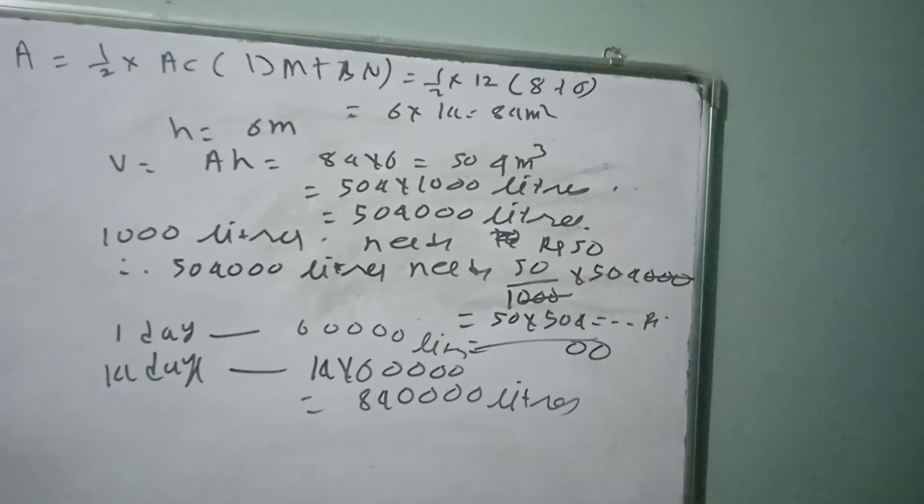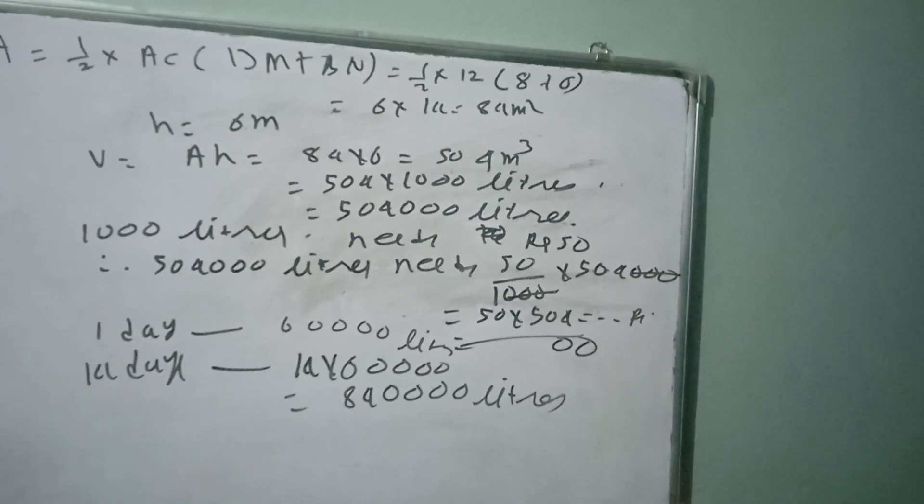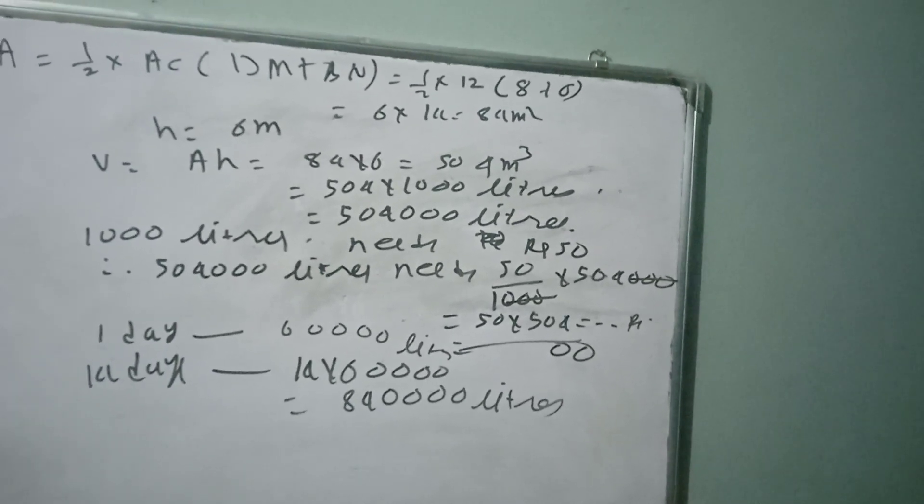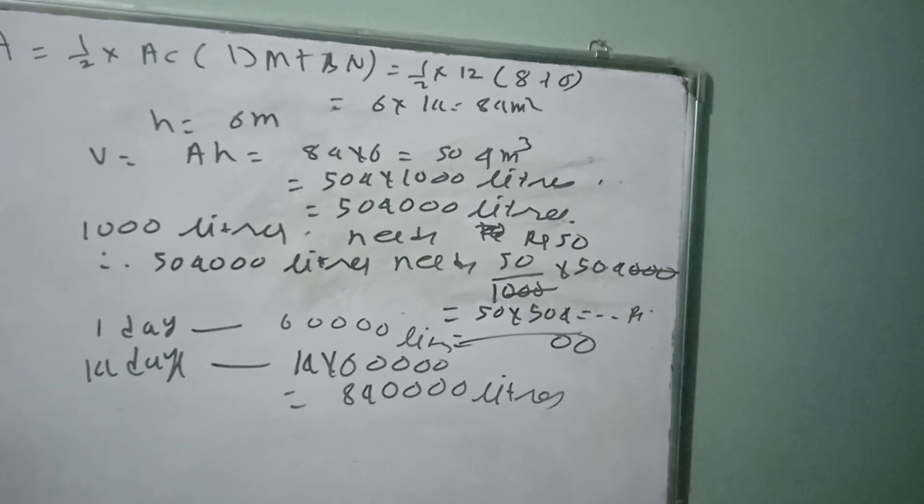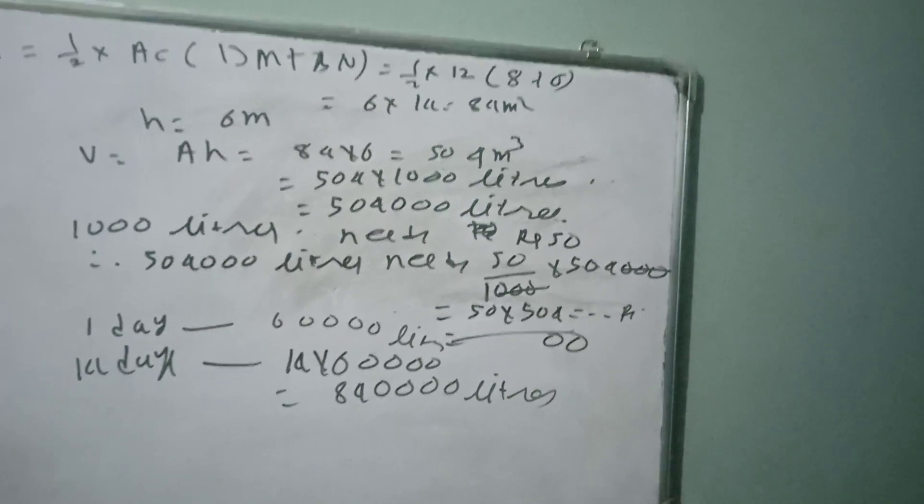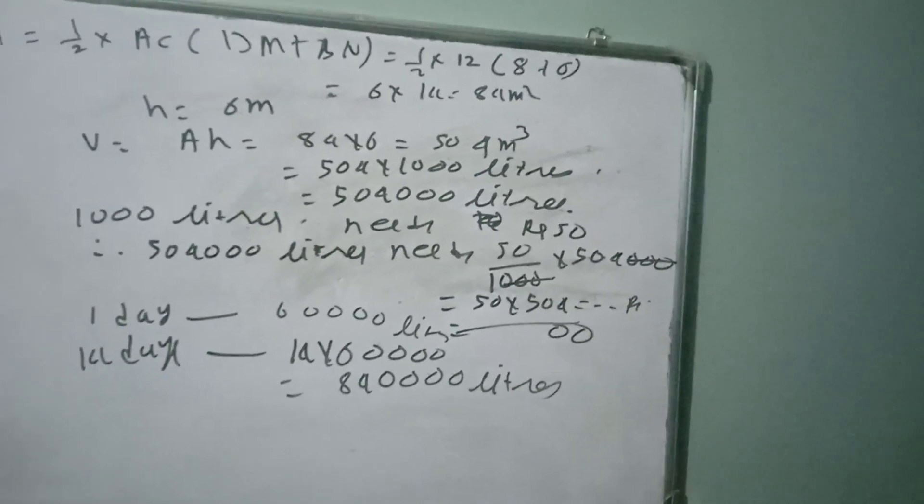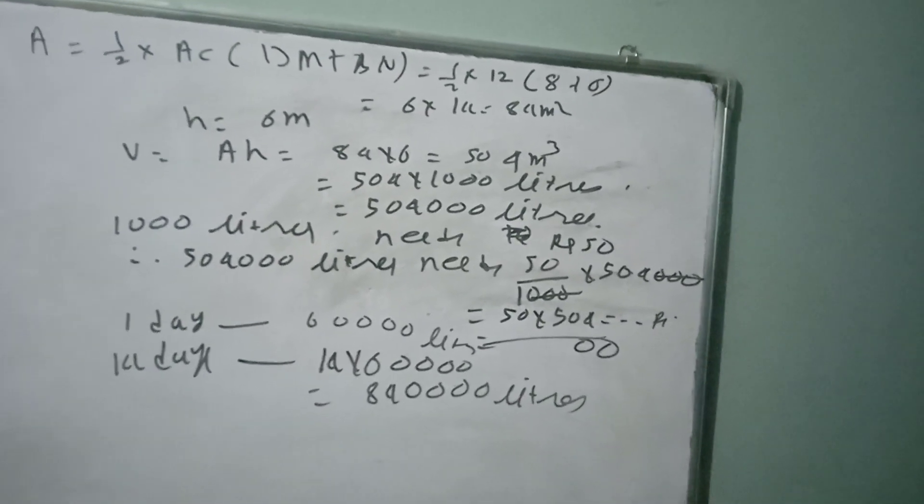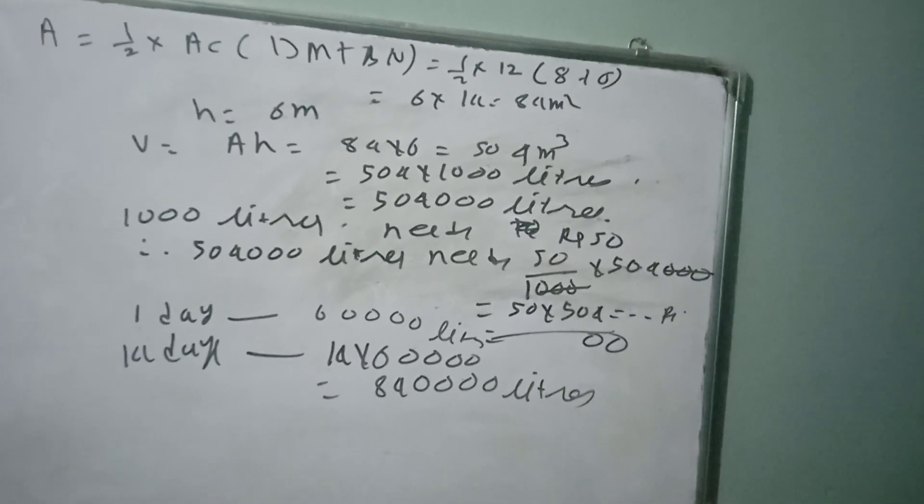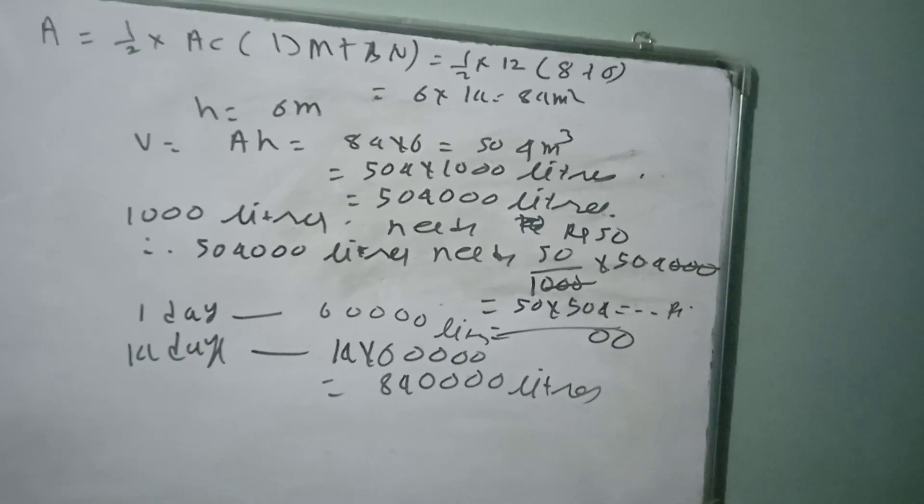504000 liters needs 50 by 1000 into 504000. 50 into 504 multiply, 50 into 504, then total cost. Then the question asks what happens for one day.